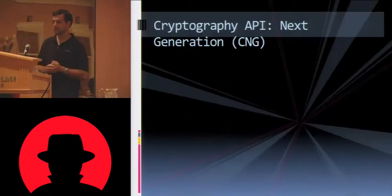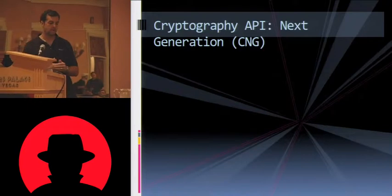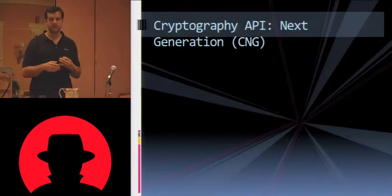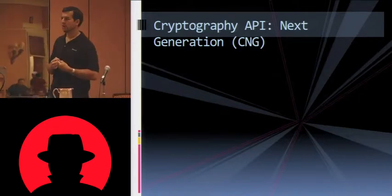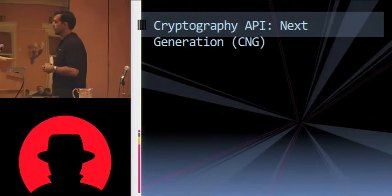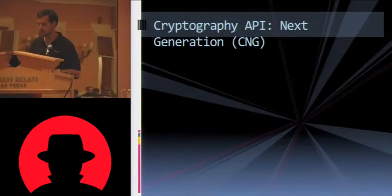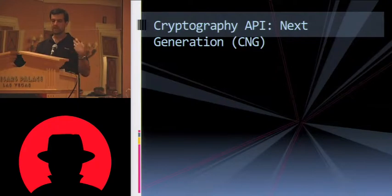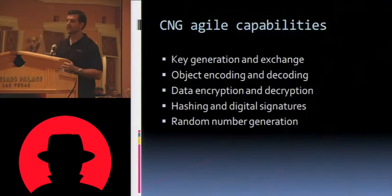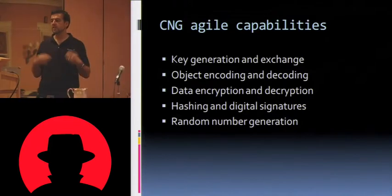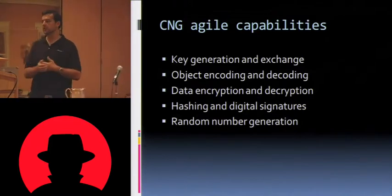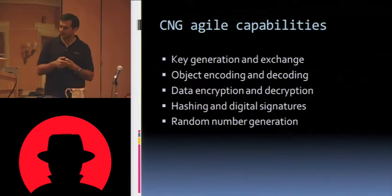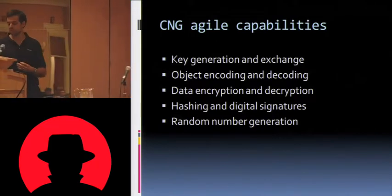And finally, CNG. CNG is the next-generation crypto API designed as a replacement for the Microsoft Crypto API, introduced in Vista and still available to this day. A large part of this library came out of the desire to have more agility. Pretty much everything in CNG is agile — key generation, exchange, object encoding, data encryption, decryption, hashing, RNG — pretty much everything is agile, which is great.